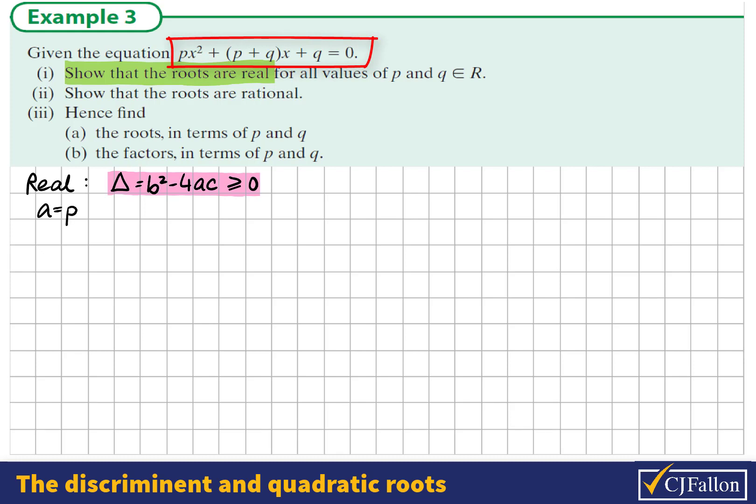Let's look at this equation. The x² coefficient a is p, the x coefficient b is p + q, and the constant term c is equal to q.